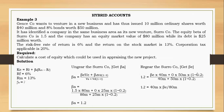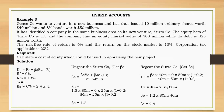Simplifying the regearing equation: 1.2 × (40 + 40) = equity beta × 40, so 1.2 × 80 = equity beta × 40, giving equity beta = 96 ÷ 40 = 2.4. So the equity beta for Jane's company in the new venture is 2.4.